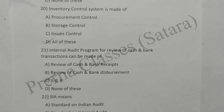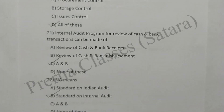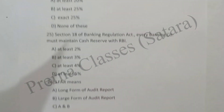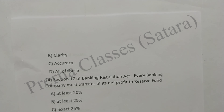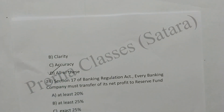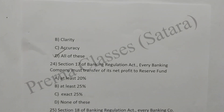Question 22: SIA means Standards of Internal Audit. Option B is correct. Question 23: Essential features of a good internal audit report are objectivity, clarity, accuracy, and all of these. Option D is correct. Question 24: Section 17 of the Banking Regulation Act — every banking company must transfer its net profit to reserve fund at a minimum of 20%. Option A is correct.